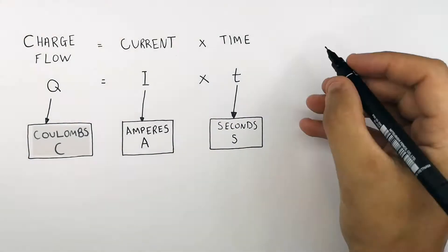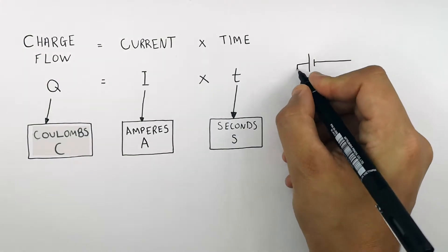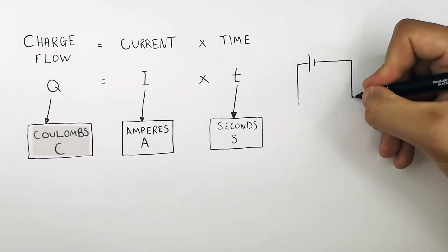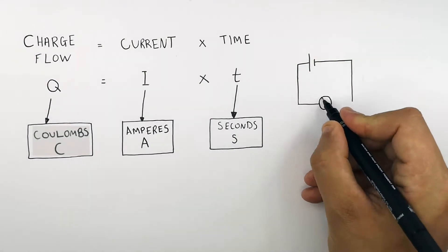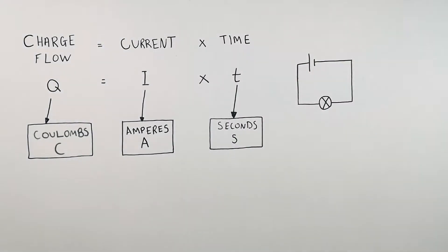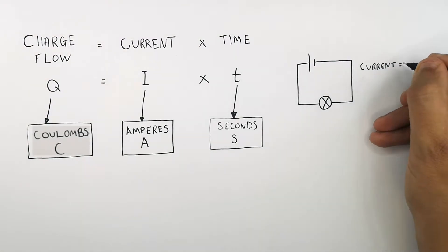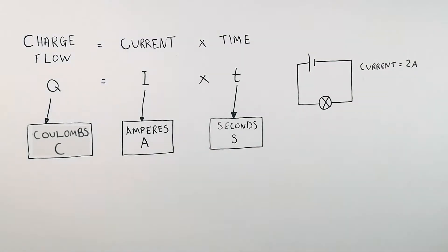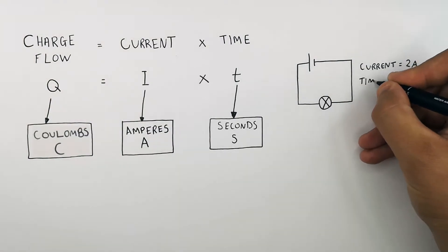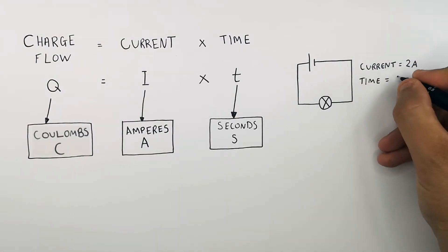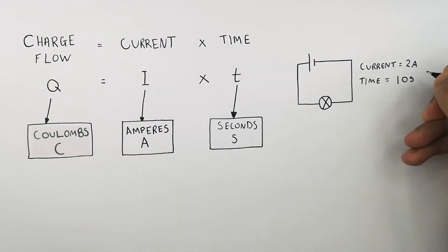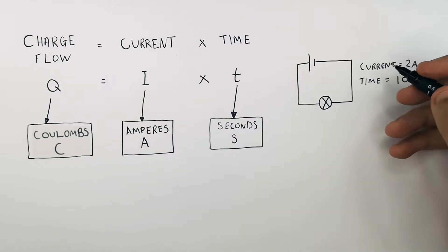This circuit I'm drawing has one cell and one bulb, and it's in series. The current flowing through the circuit is 2 amps, and the circuit was switched on for 10 seconds.